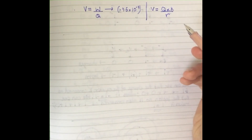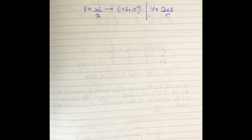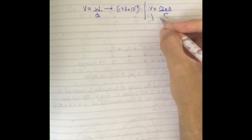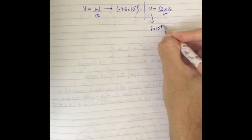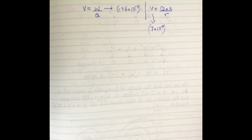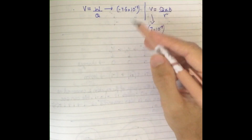The electric potential is due to the point charge, which is 7 times 10 to the power of minus 9. This charge was giving an electric potential — essentially a force — acting on the negative 4.5 nanocoulomb charge. We use this formula to calculate the work done.